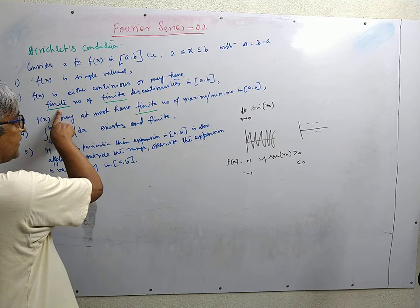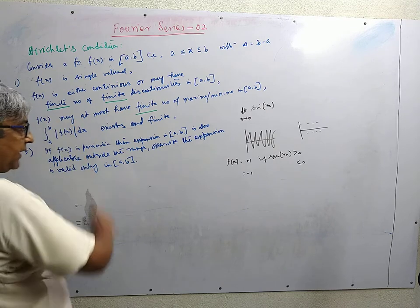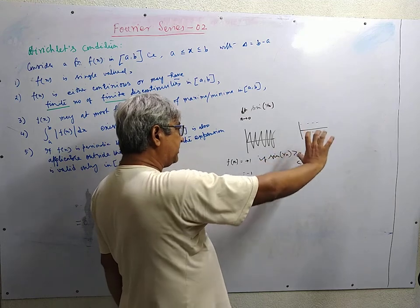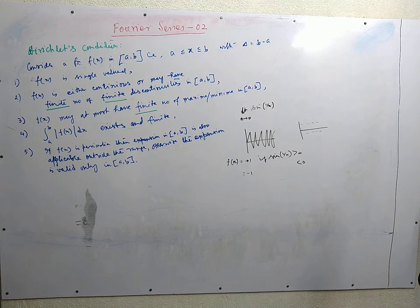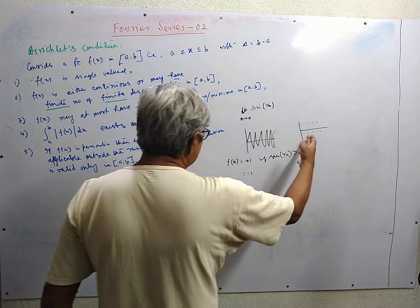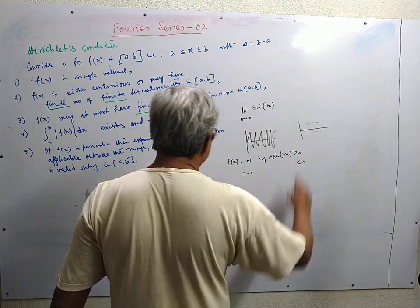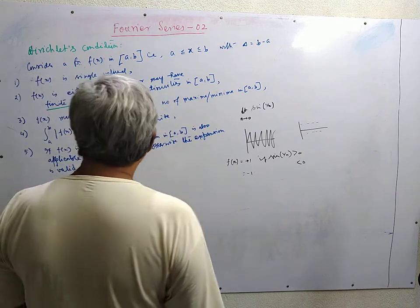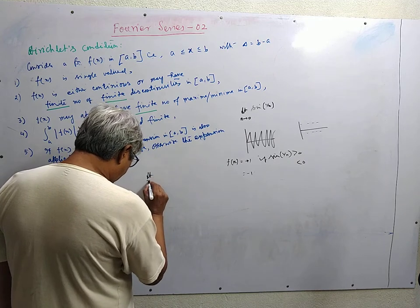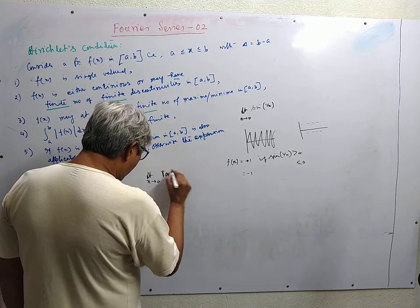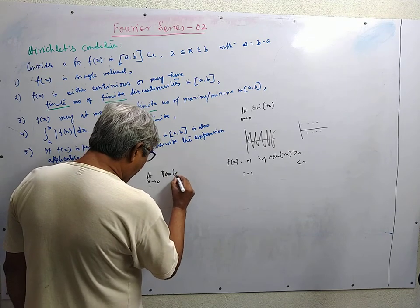By finite discontinuity we mean the difference between the left hand limit and right hand limit of the function at the point of discontinuity is a finite quantity. When the difference is infinite, we call it infinite discontinuity. Then coming to counting of discontinuities — such functions have infinite number of discontinuities. Another example: the function tan(tan(1/x)) as x tends to 0.